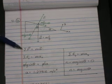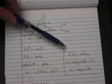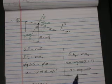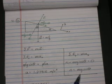We then do F equals ma in the x and y directions. In the y direction, what we get from it is n equals mg cosine theta.